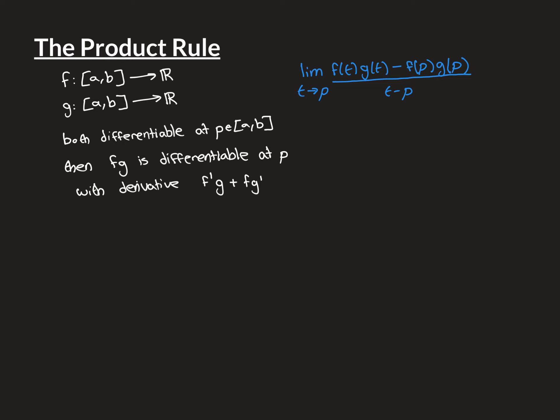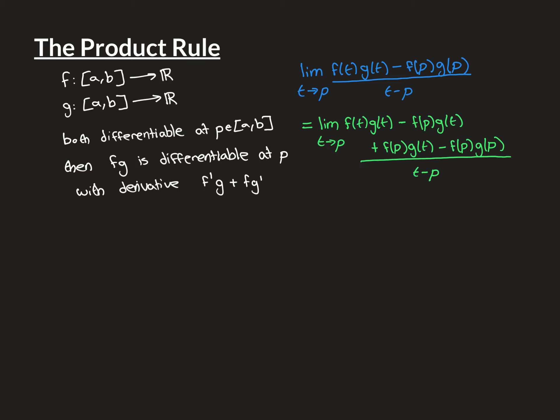We need to show that, one, this limit exists, and two, that it has the correct value. So the first thing we're going to do is a brilliantly sneaky move. We're going to turn this into something that looks more complicated by subtracting off and then adding back the same thing. This is actually exactly the same expression.